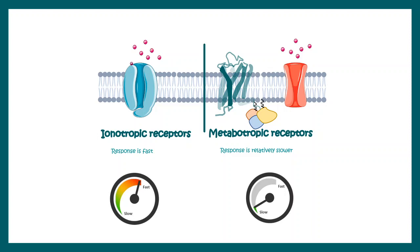In this video, we talked about ionotropic receptors — where we can find them and how they work. Ionotropic receptors are fast response receptors. That means the overall response of ionotropic receptors is quite fast compared to metabotropic receptors. If you want to find more about ionotropic and metabotropic receptors, the video would be in the i button.